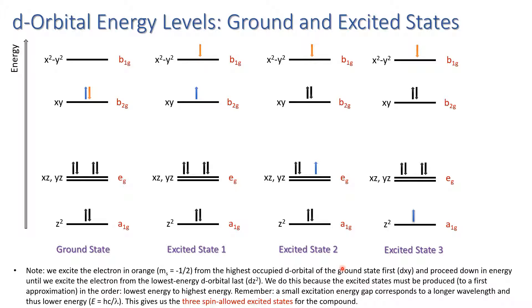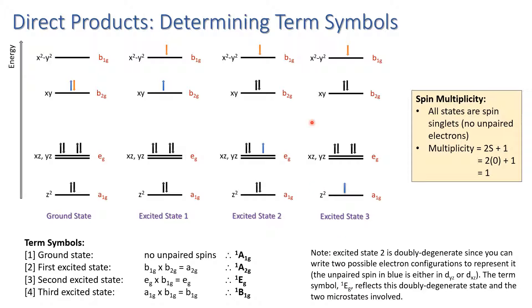The next step is to work out the term symbols for these excited states and of course also the ground state. We use the group theoretical technique of taking direct products. In the case of the ground state, all orbitals contain all fully occupied containing pairs of electrons and so this transforms as the totally symmetric representation of the point group. So the term symbol for the ground state is A1g. Notice also that we can work out the spin multiplicity. It's given by the simple formula 2S+1. There are no unpaired spins and so we're dealing with a spin singlet. So the ground state is singlet A1g.